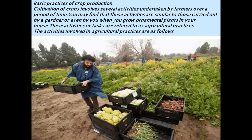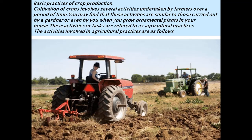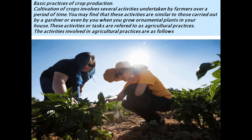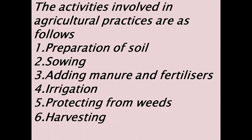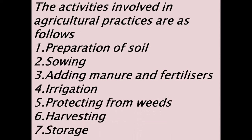This is not new — you have seen this many times and might have been involved with your parents and family members. The activities involved in agricultural practices are: 1. Preparation of soil, 2. Sowing, 3. Adding manure and fertilizers, 4. Irrigation, 5. Protecting from weeds, 6. Harvesting, 7. Storage. In today's video, we are learning in detail about the first two practices — that is, preparation of soil and sowing.